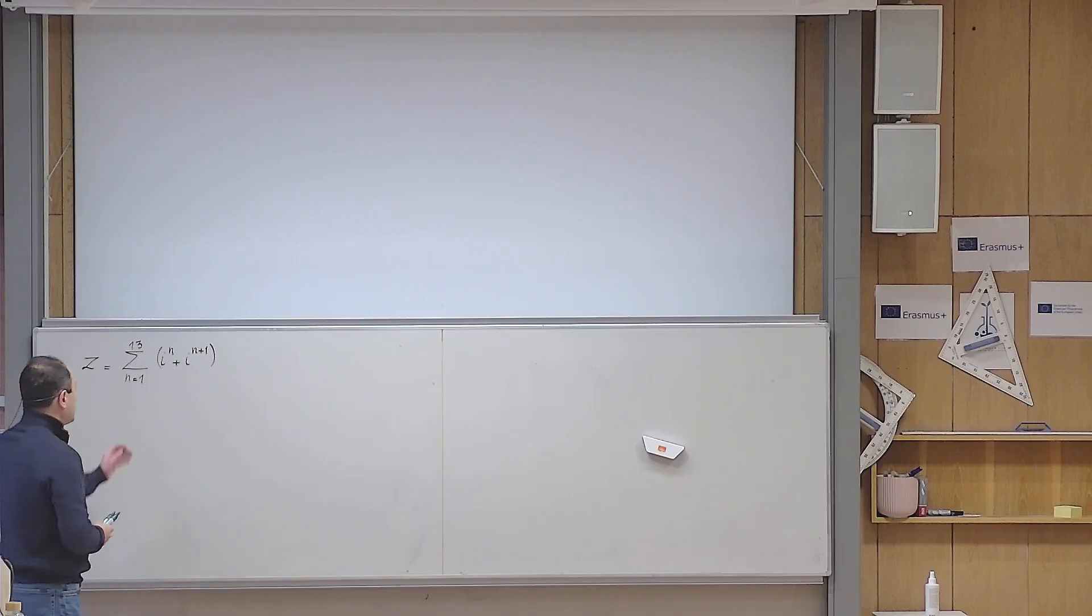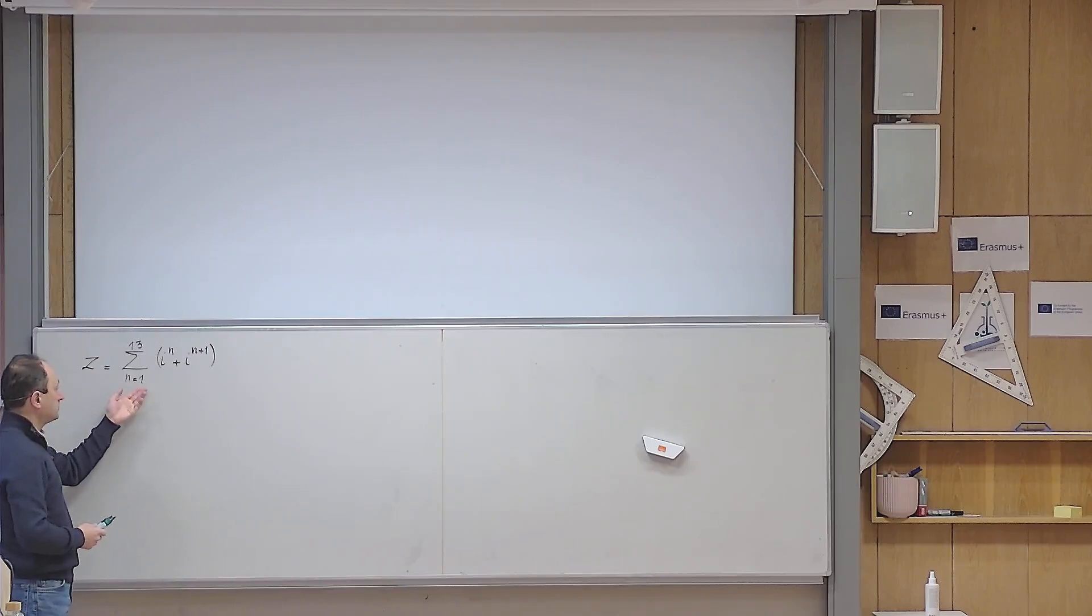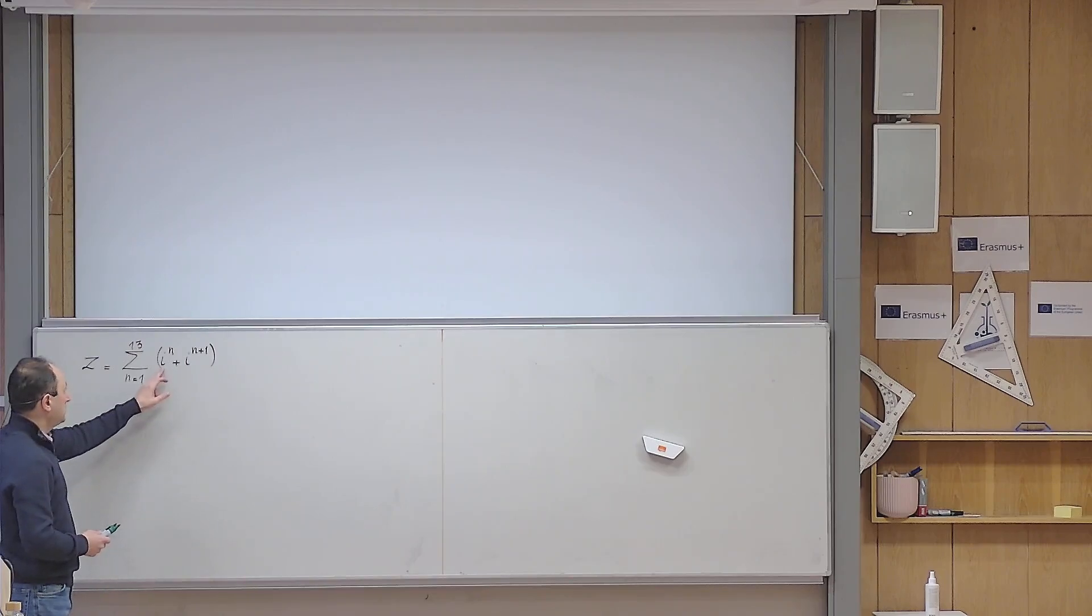Okay, now let us solve the problem. So I want to find the real part of this complex number, so I have to put it in a standard form. I have to simplify this expression first. One idea is to factor i to the n out.